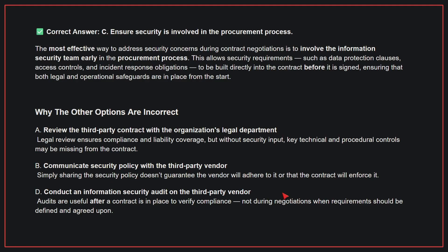Why are the other options incorrect? A: Review the third-party contract with the organization's legal department — legal review ensures compliance and liability coverage, but without security input, key technical and procedural controls may be missing from the contract. B: Communicate security policy with the third-party vendor — simply sharing the security policy doesn't guarantee the vendor will adhere to it or that the contract will enforce it. D: Conduct an information security audit on the third-party vendor — audits are useful after a contract is in place to verify compliance, not during negotiations when requirements should be defined and agreed upon. Therefore, the correct answer is C.